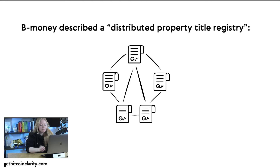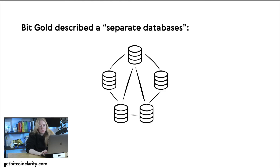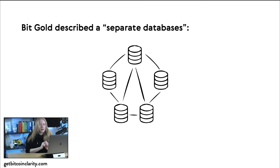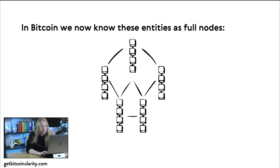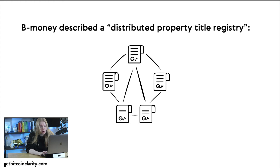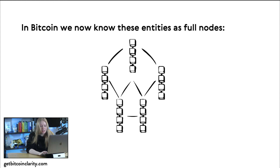Bit gold, by Nick Szabo, did a fairly similar thing. He described a separate database construction — essentially a distributed database that people could run, where payments could be made and recorded across this network of databases. These weren't very fleshed-out ideas, but they were the inspiration for Bitcoin. What we now call these two concepts — the distributed property title registry and the separate database concept — we now know as full nodes in Bitcoin.